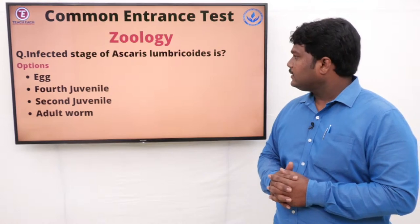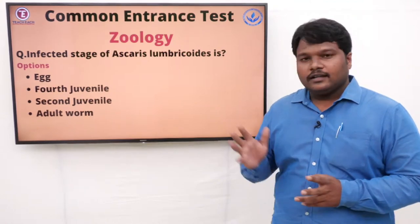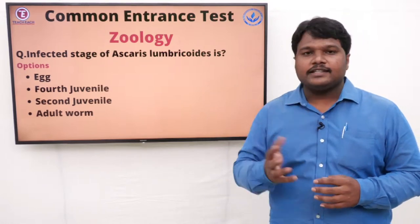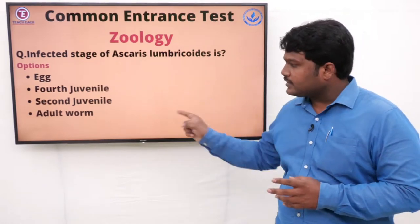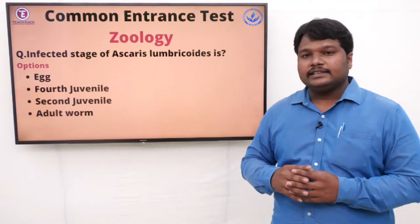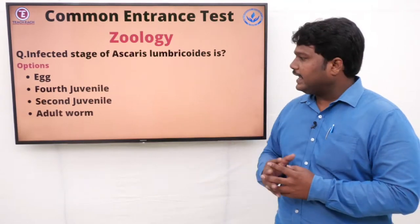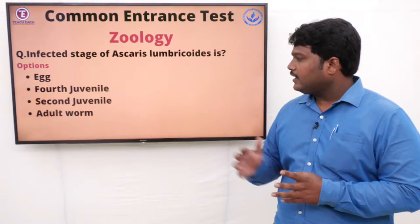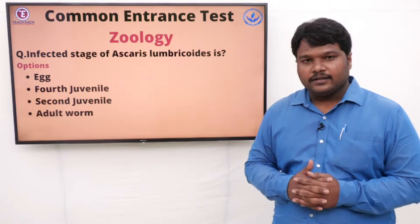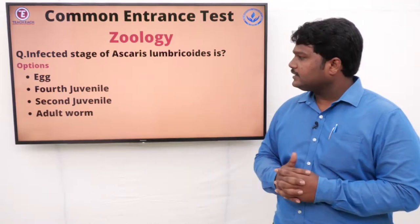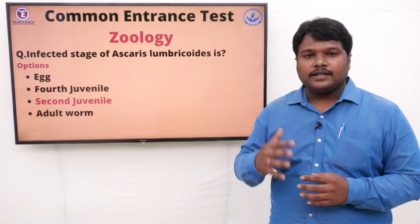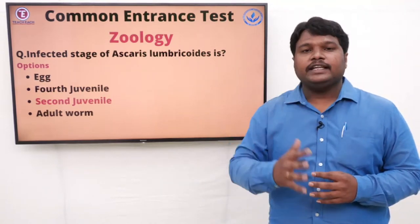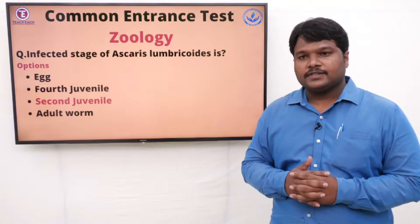Question 44: The infective stage of Ascaris lumbricoides is. Infective stage means at which stage the Ascaris becomes capable of causing infection. Options: A) Egg, B) 4th juvenile, C) 2nd juvenile, D) Adult worm. The right answer is 2nd juvenile. At the stage of 2nd juvenile, Ascaris is capable of producing infection in living organisms.